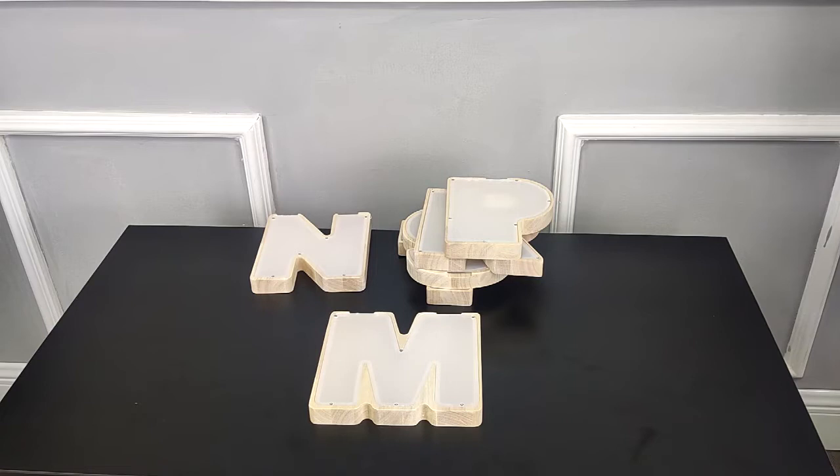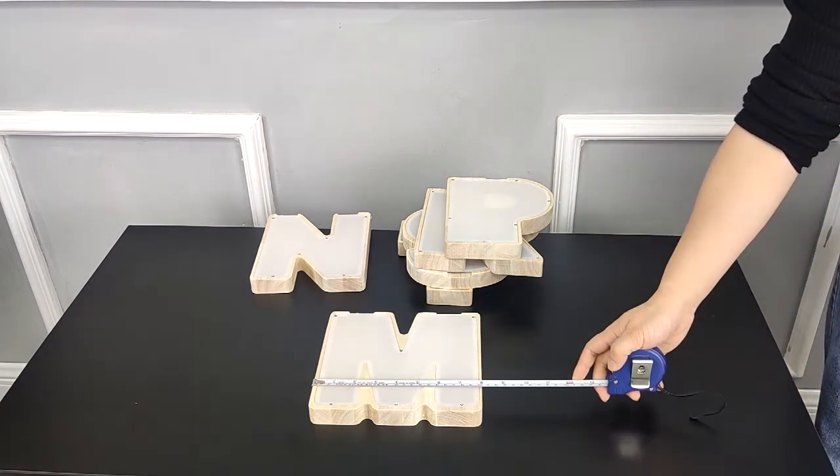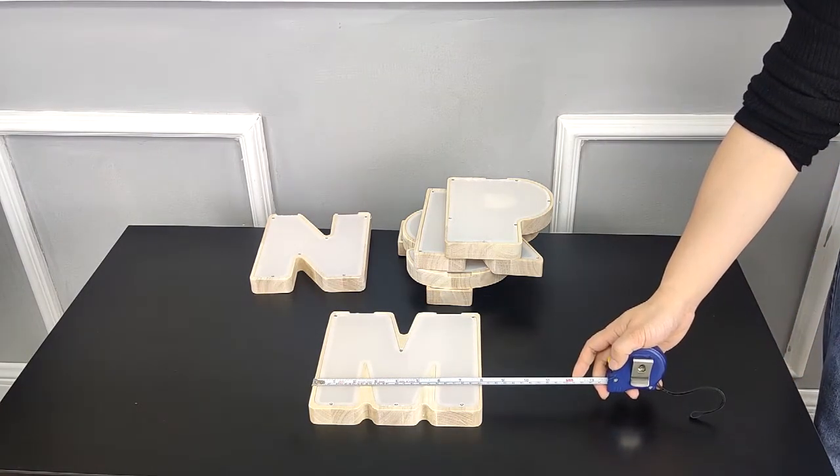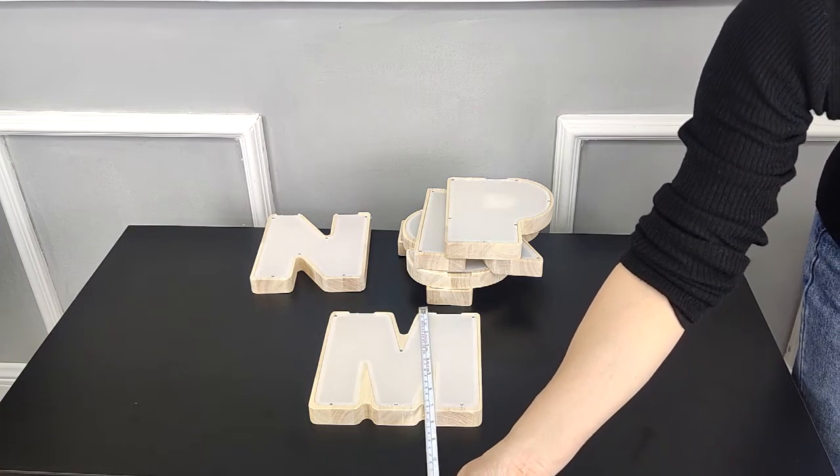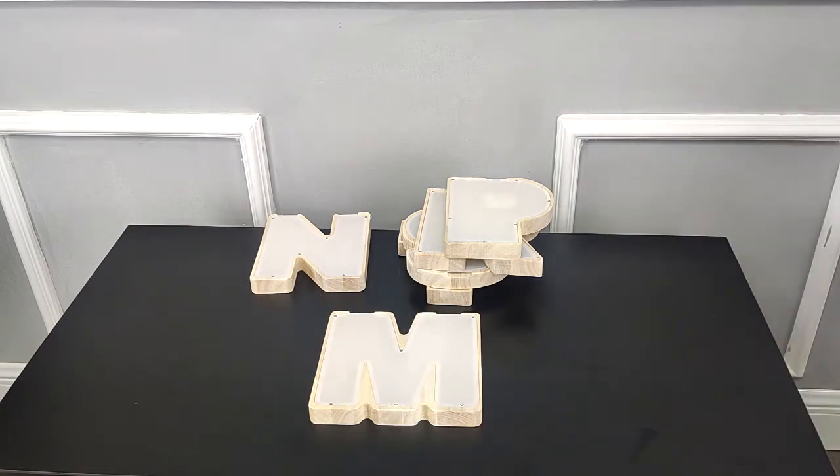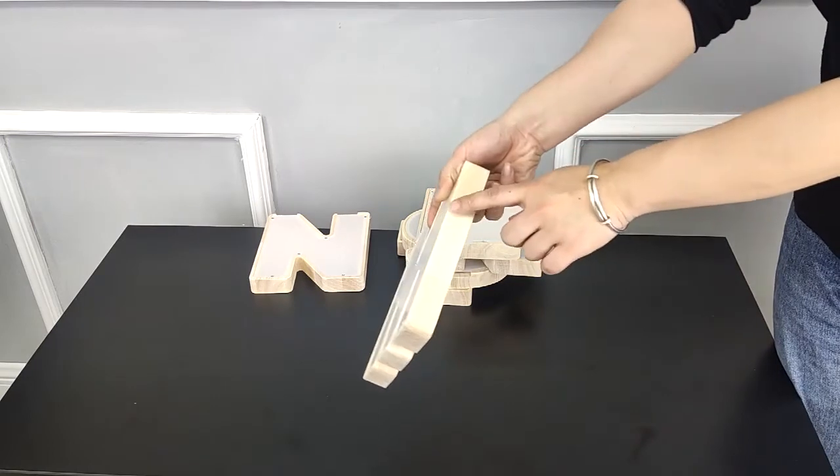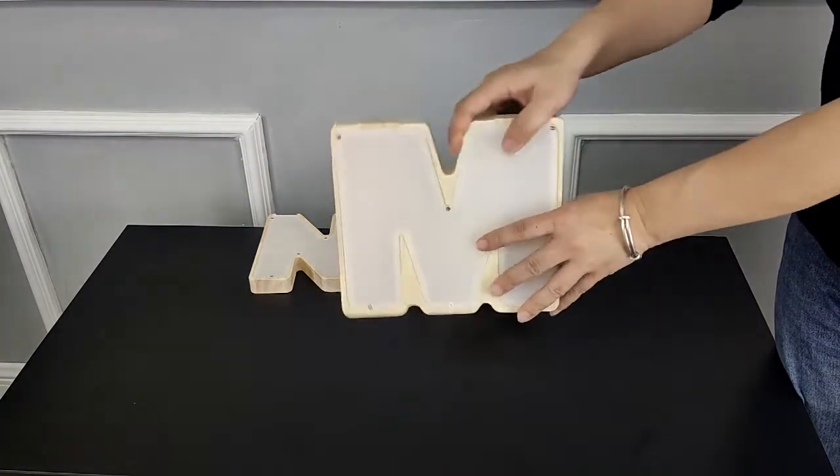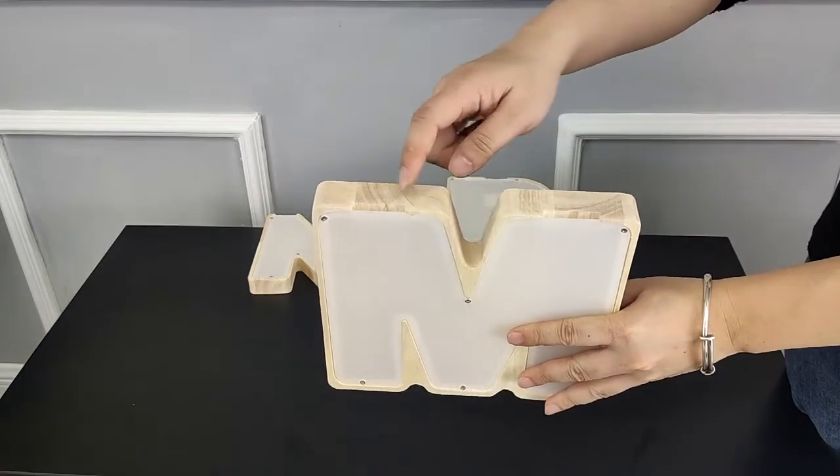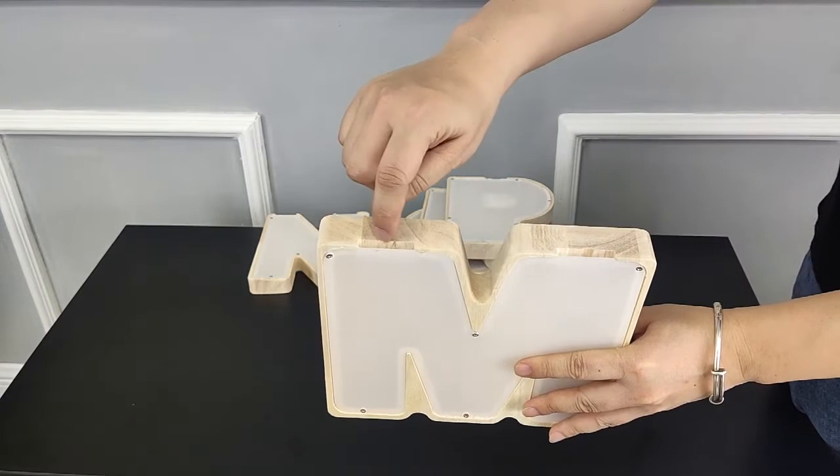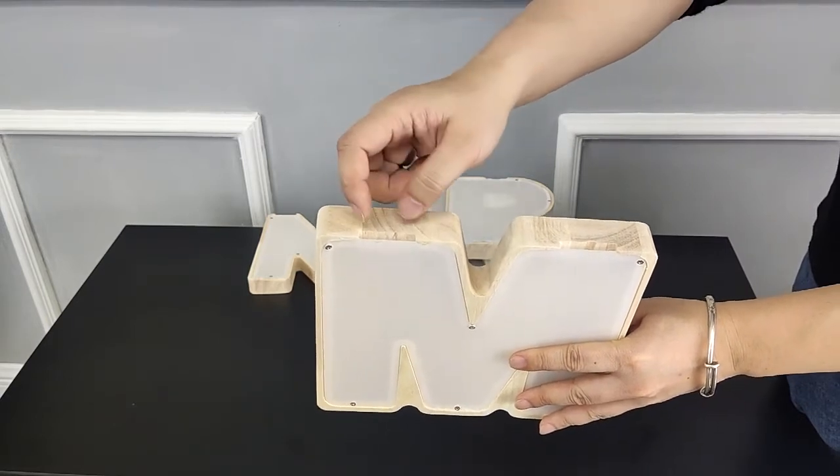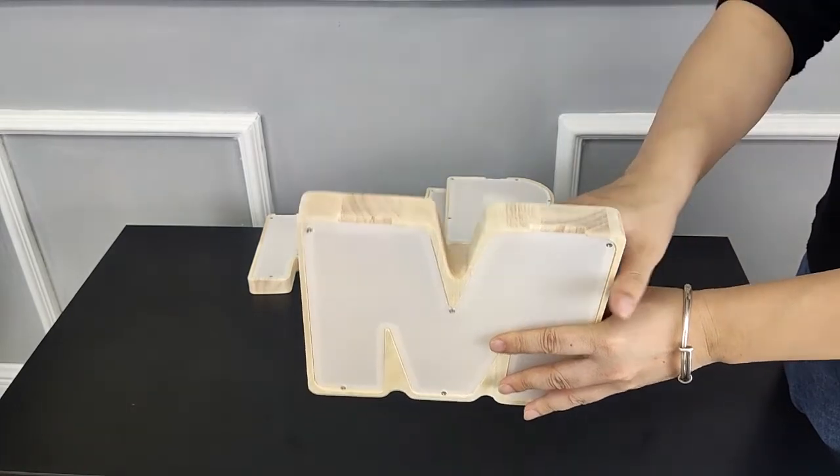Our next letter is letter M. Letter M is wider—7.8 inches wide, 7 inches tall, and 1 inch deep. It comes with two drop slots measuring 1.5 inches wide, one-eighth inch deep. This letter weighs about 0.88 pounds.